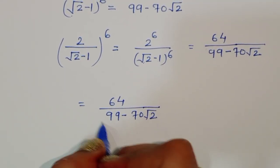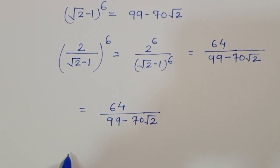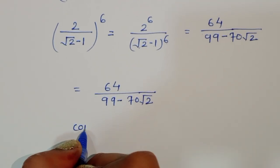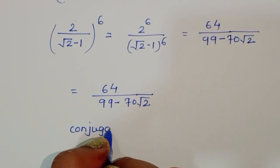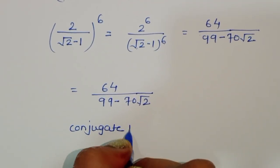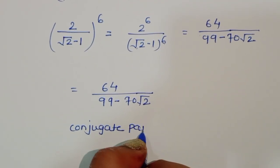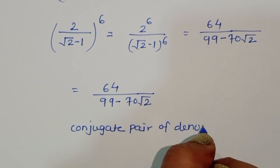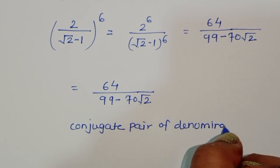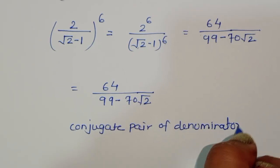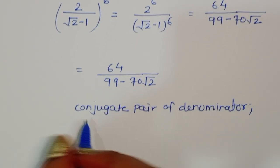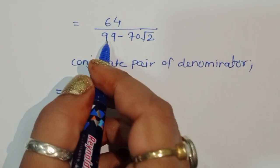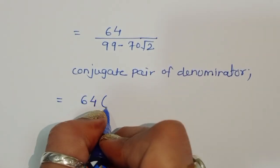So we have 64 divided by 99 minus 70 square root of 2. We need to multiply by the conjugate pair of the denominator to simplify.